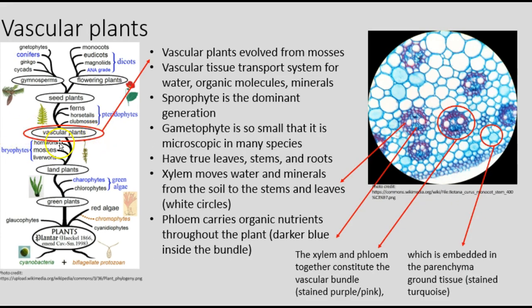Vascular plants evolved from mosses, and they possess three advantageous developments. Vascular tissues are transport systems for water, organic molecules, and minerals. The sporophyte is the dominant generation; the gametophyte is so small that it is microscopic in many species. Vascular plants have true leaves, stems, and roots through which the vascular system transports materials. Xylem moves water and minerals from the soil to the stems and leaves. Phloem carries organic nutrients throughout the plant.